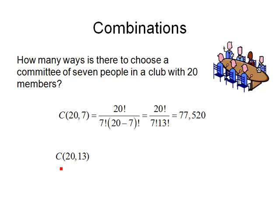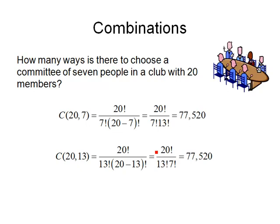That would be C(20,13). When I work that out, I get 20 factorial divided by 13 factorial times 7 factorial, which is exactly the same number of ways — 77,520. So it's reassuring that picking the 7 people to be on the committee or the 13 people to not be on the committee gives exactly the same number of ways.